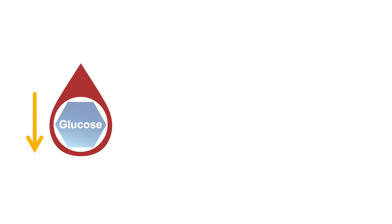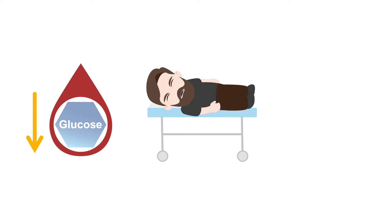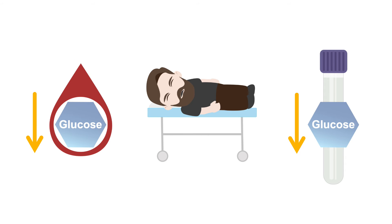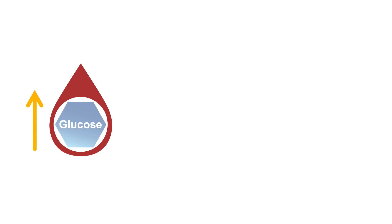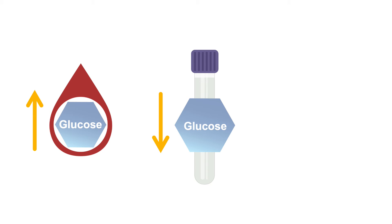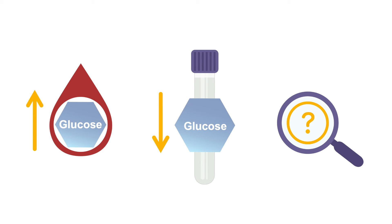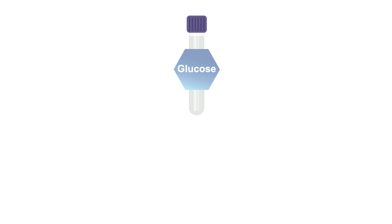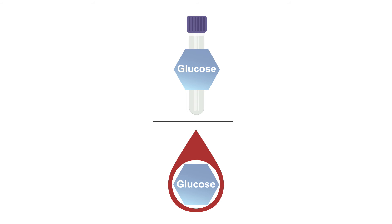Hyperglycemic patients who present with central nervous system symptoms may have low CSF glucose concentrations. In the setting of hyperglycemia, low cerebrospinal fluid glucose may not be recognized if only the absolute CSF glucose concentration is considered. Therefore, in the setting of hyperglycemia, the CSF glucose to serum glucose ratio should be calculated. The normal cerebrospinal fluid to serum glucose ratio is greater than 0.6.